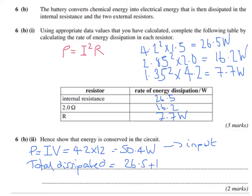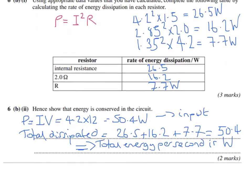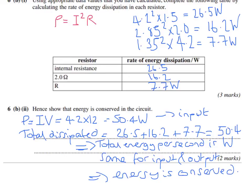If energy is conserved, you'll get the same amount out. The total dissipated is the sum of the numbers we just calculated. If we add all those together, hey presto, we get 50.4 watts. So the total energy per second is the same for input and output, so energy is conserved. And that's how you solve that question.